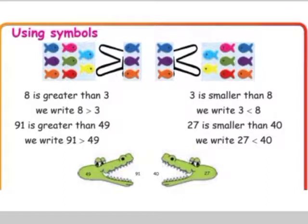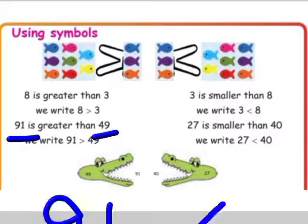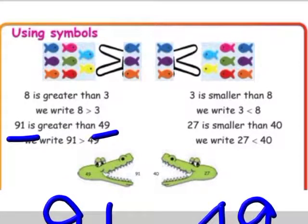If we have a 2-digit number: here 91 is a 2-digit number and 49 is also a 2-digit number. When we compare 2-digit numbers, we have to look at the tens place.